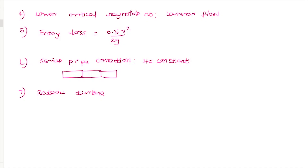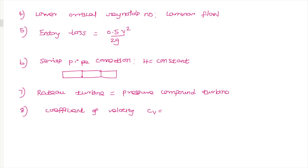The next question is about the reaction term — whether it is velocity or pressure. This refers to the pressure column. The following question is about the coefficient of velocity: the correct answer is in the range of 0.97 to 0.99.